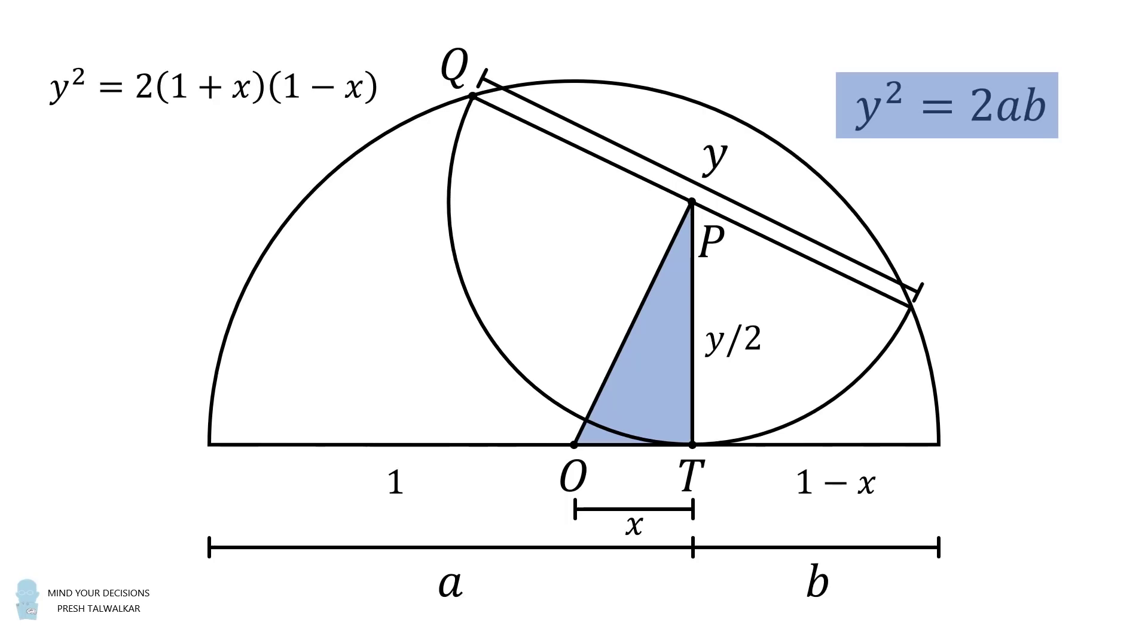So we have y squared is equal to 2 multiplied by the quantity 1 plus x multiplied by the quantity 1 minus x. We can simplify this. y squared is equal to 2 minus 2x squared.